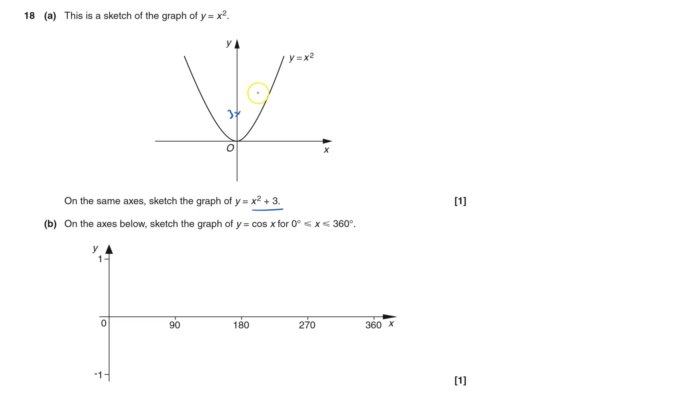So I'm going to say it's gone up by 3. So that one's gone up to 3 there, that one's gone up to 3 there, that one's gone up to 3 there. And it will look something like so. Like that. And that's the first part done.